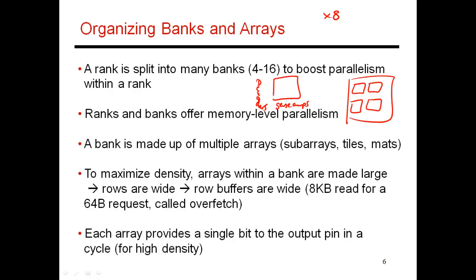When you access an array, an entire row is read into the sense amps — the row buffer. If you use larger arrays, you have larger rows, which means your row buffers will also be extremely large. This is why when you make a request for a 64-byte cache line, an entire row buffer — as large as 8 kilobytes or 16 kilobytes — is read. This is referred to as overfetch, and it happens because these DRAM chips are optimized for density.